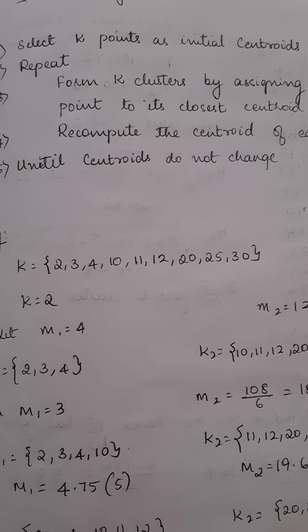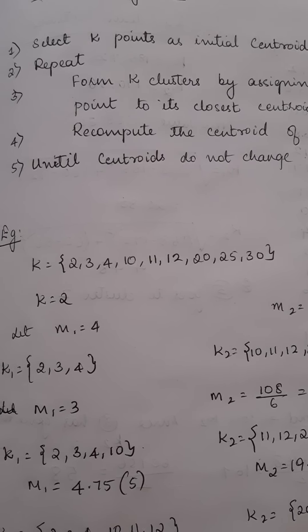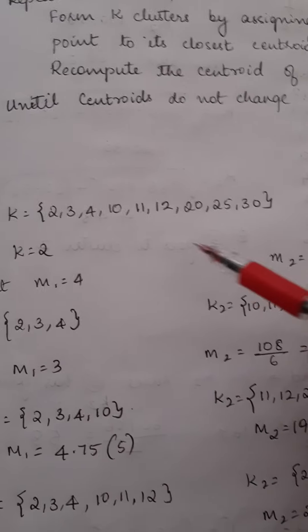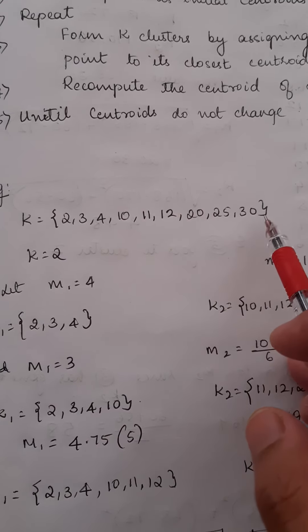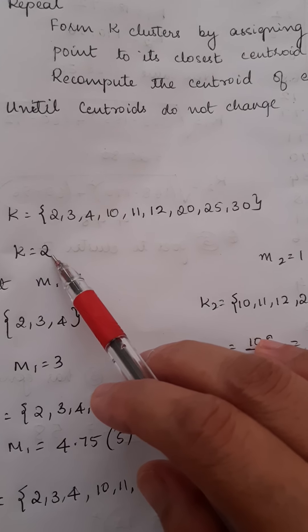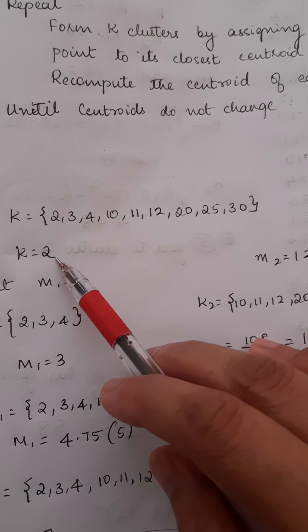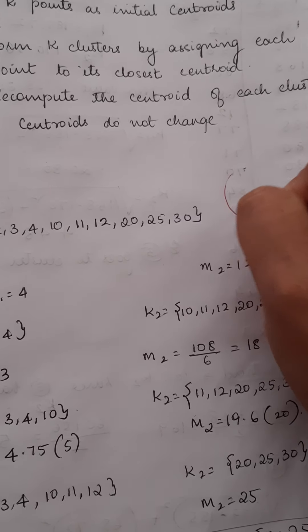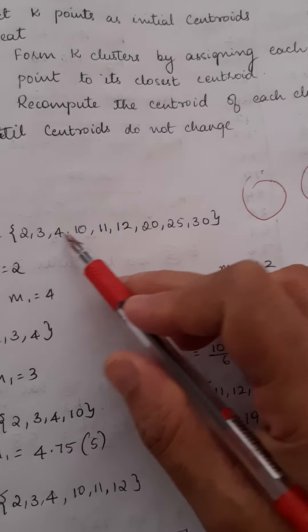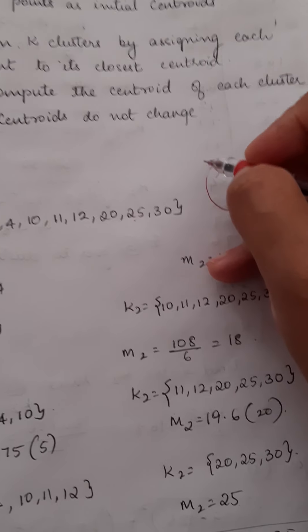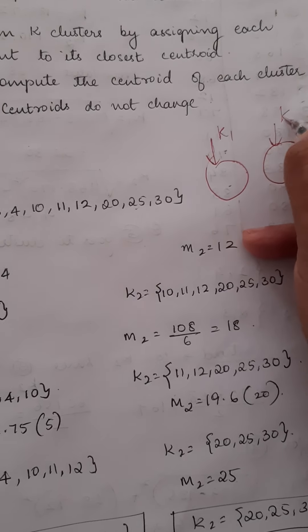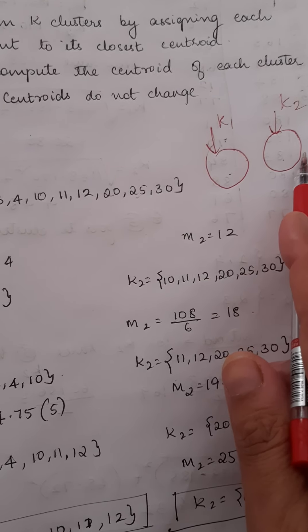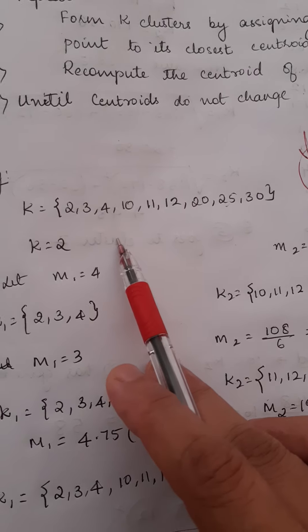Based on some distance calculation, we will assign values to the different centroids. Here I have some numbers given to me, and I am taking K equal to 2, meaning I am going to have two clusters. I have to put these numbers into two clusters, K1 and K2, based on some centroid value.